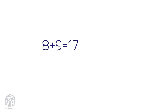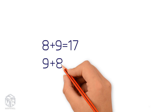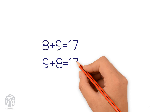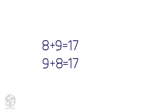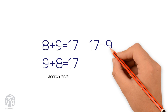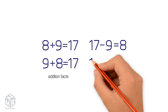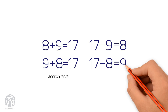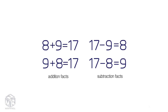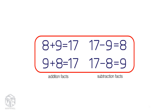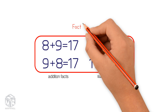Let's try another example. 8 plus 9 equals 17. 8 and 9 are the addends. 17 is the sum. We can change the order of the addends and the sum will remain the same. 9 plus 8 equals 17. These are the addition facts. Now let's write down the subtraction facts. We subtract a part from the whole to get the other part. 17 minus 9 equals 8. 17 minus 8 equals 9. These are the subtraction facts. These two addition facts and two subtraction facts make the fact family.